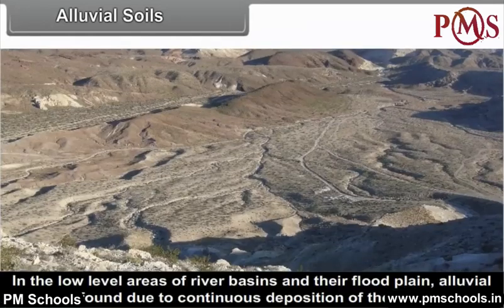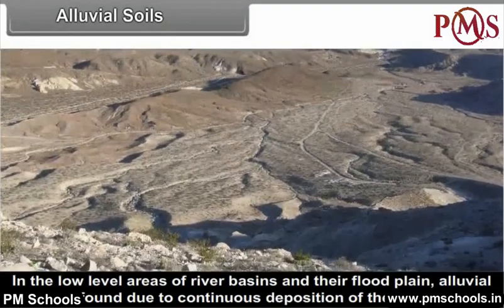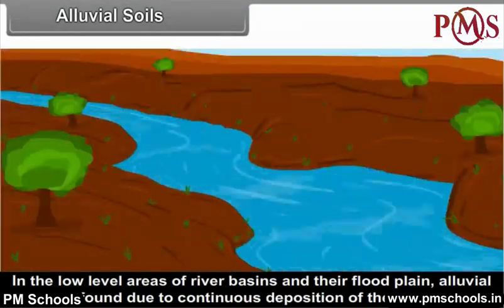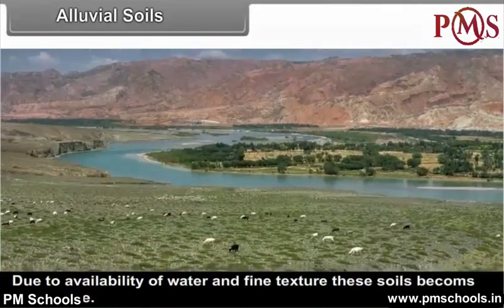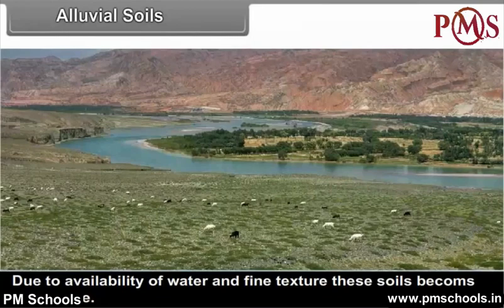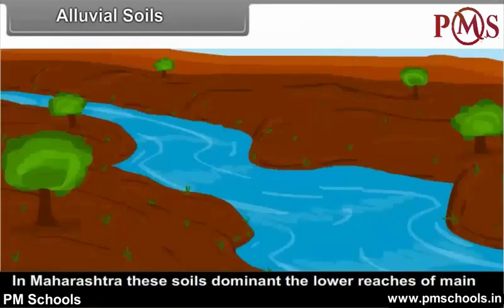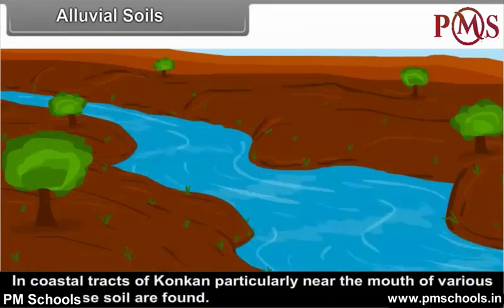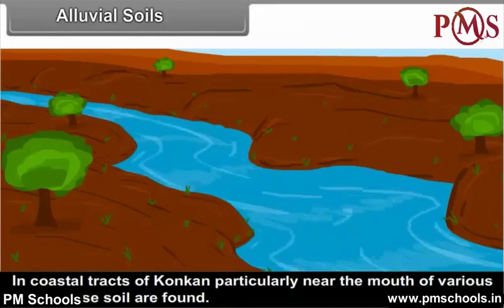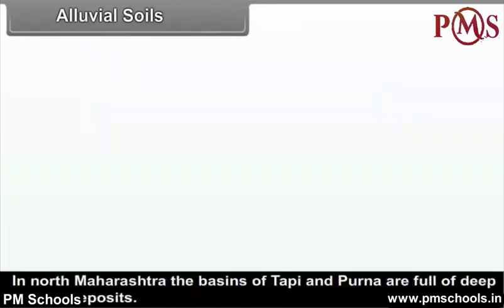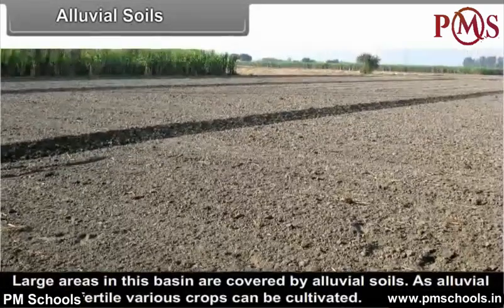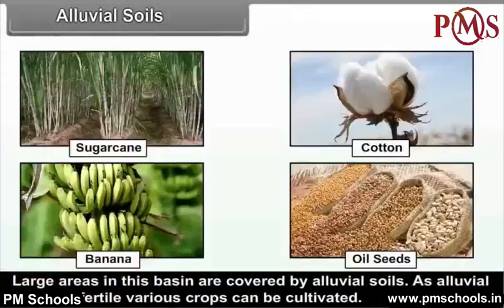Alluvial Soils. In the low-level areas of river basins and their flood plains, alluvial soils are found due to continuous deposition of the load. Due to availability of water and fine texture, these soils become very fertile. In Maharashtra, these soils dominate the lower reaches of main rivers. In coastal tracts of Konkan, particularly near the mouth of various rivers, these soils are found. In North Maharashtra, the basins of Tapi and Purna are full of deep alluvial deposits. As alluvial soils are fertile, various crops can be cultivated.